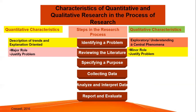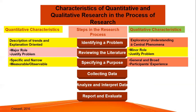For reviewing the literature, in quantitative research that is a major role — you have to justify the problem — but for qualitative it is just minor, just justify the problem. For specifying a purpose, in quantitative it must be specific and narrow, measurable or observable, whereas for qualitative it is general and broad, meaning from the participant's experience.